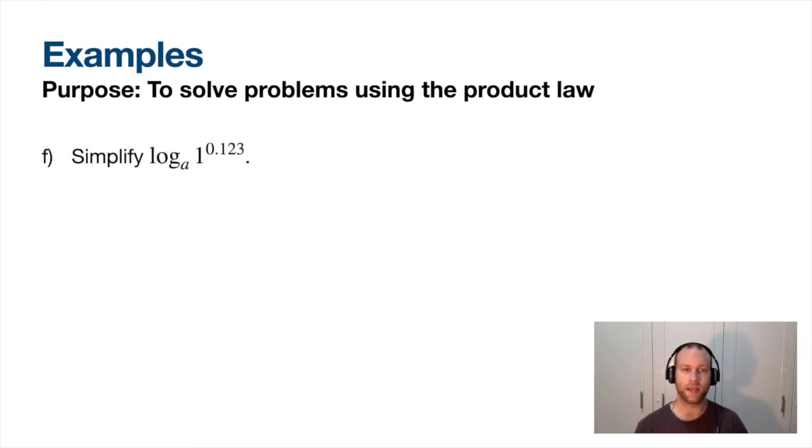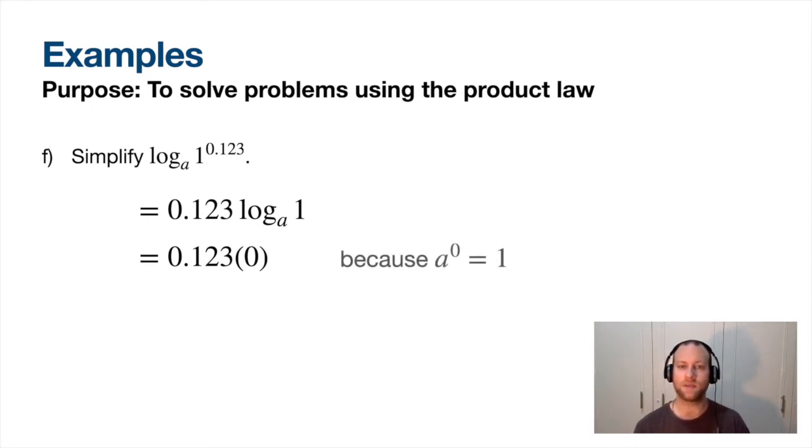Simplify this guy. Okay, let's write this out so the power can go in the front. And I've got log base a of one. This is going to equal zero. Well, why is that, you say? Because a to the power of zero gives you one. So log base anything to one has to equal zero. So my answer for this is zero. That's the only way this works.